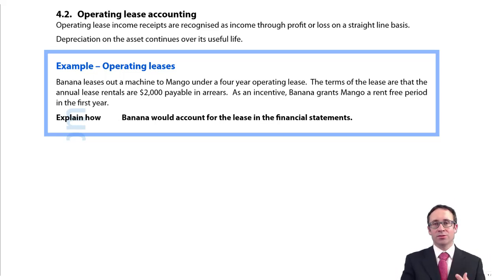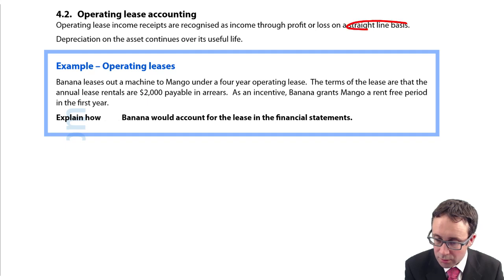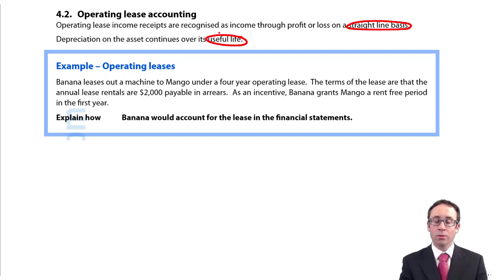The lessor still has the risks and rewards of ownership. So if that's the case the accounting treatment is pretty straightforward. We go through there and recognize the income through profit or loss on a straight line basis and then the depreciation continues over the asset's useful life as normal.